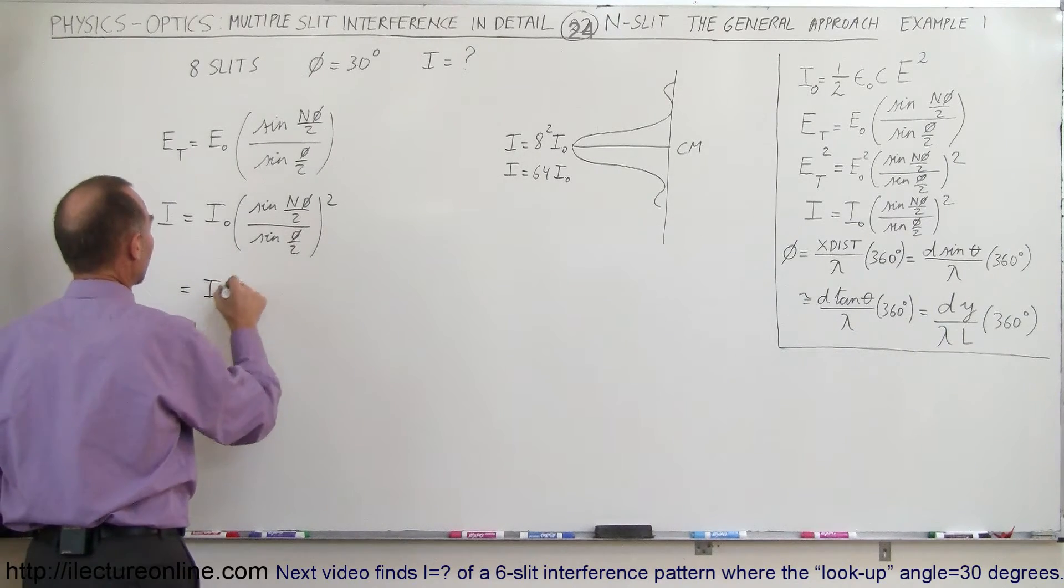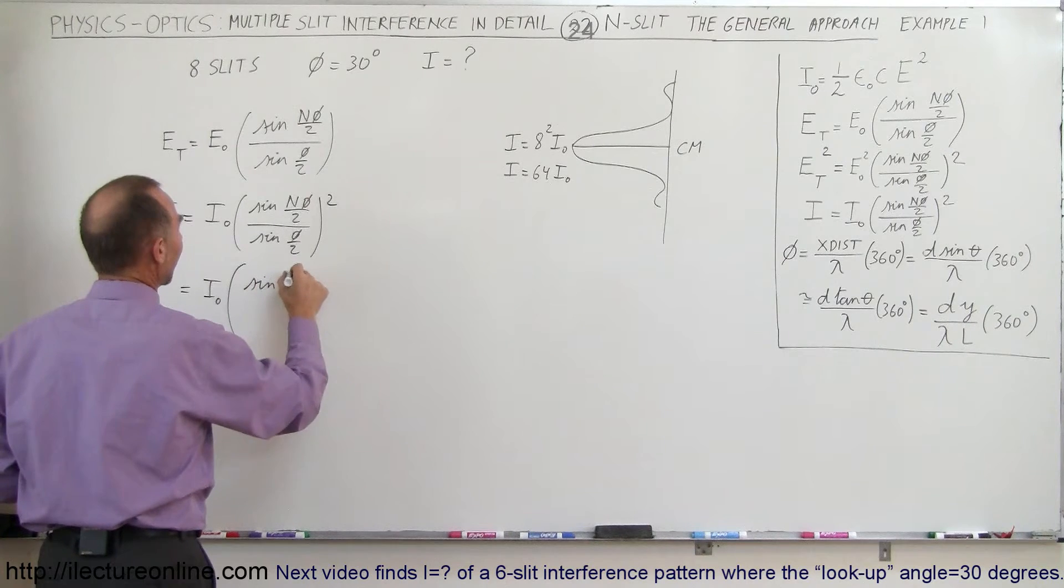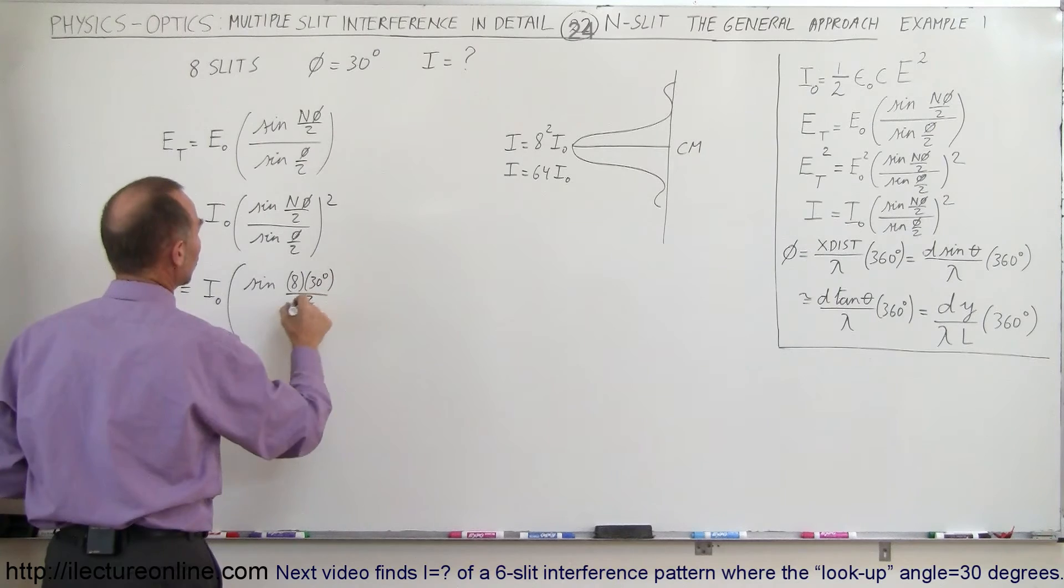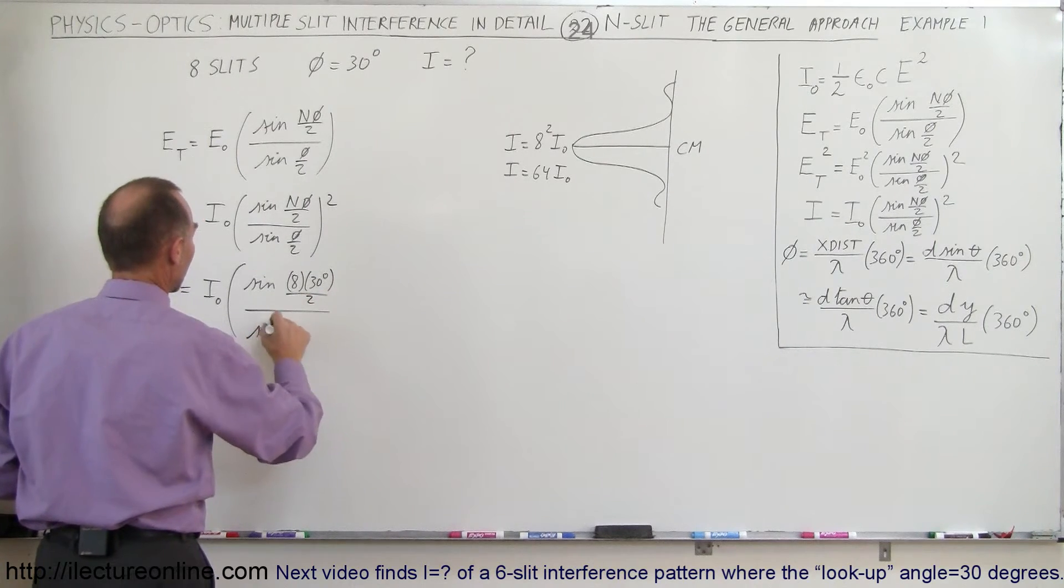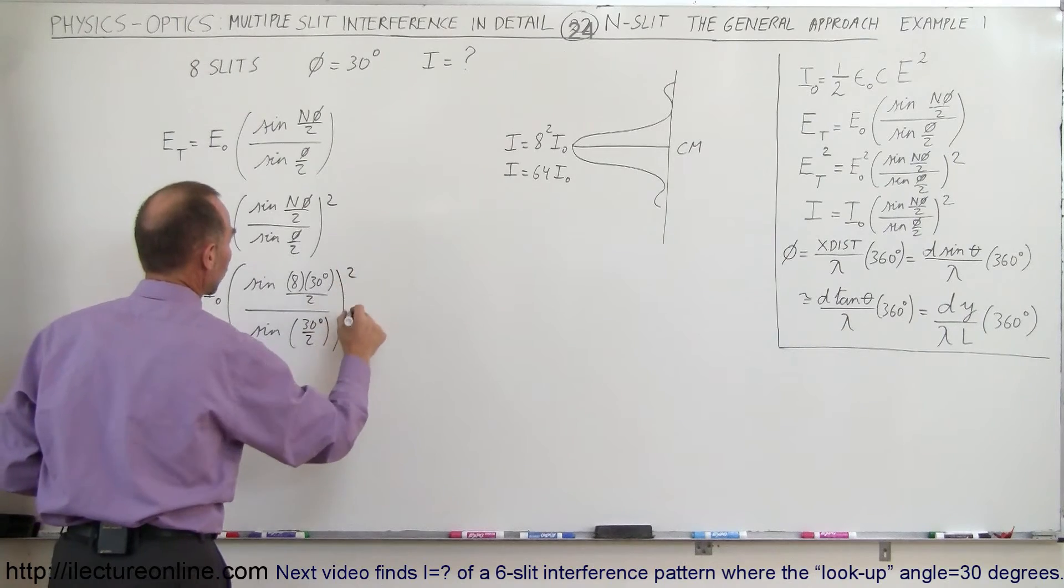So this is equal to i sub-naught times the quantity the sine of 8 times 30 degrees divided by 2 divided by the sine of 30 degrees divided by 2, and the whole thing quantity squared.